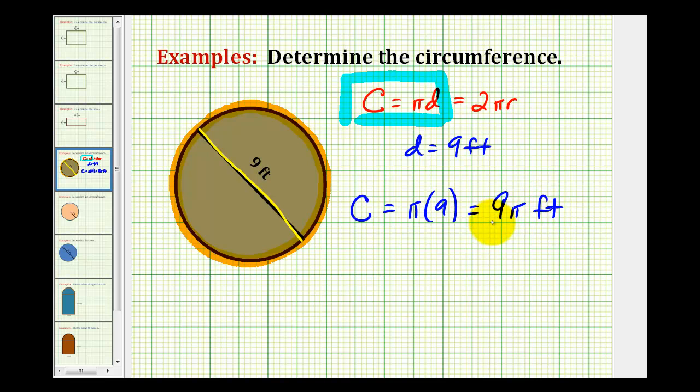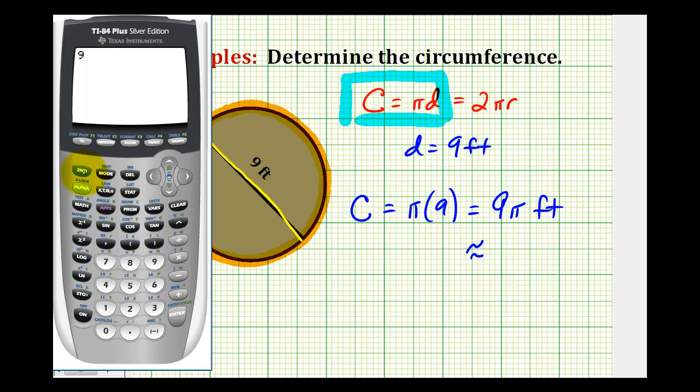We're often asked to round the circumference to the nearest tenth or hundredth. So let's go ahead and get a decimal approximation for this. If we press nine and then second exponent key here, notice how the pi appears on the screen. We can press enter. So if we round to the hundredths, the circumference is approximately 28.27 feet.